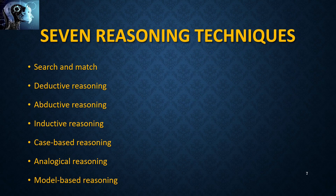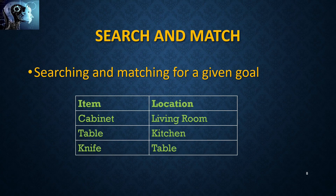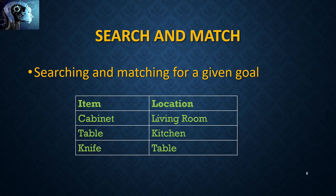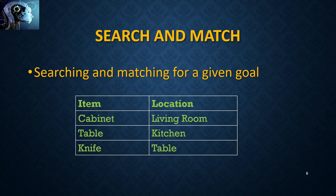Now we move into some specific categories of reasoning techniques. There are seven types of reasoning techniques. The first is search and match. Here, you have some set of information, and by searching you can find the matching goal or conclusion. For example, you have information in a table showing what items are in your house and their locations. It shows the cabinet is in the living room. When you want to find the location of the knife, you first find the immediate location of the knife — according to the table it is on the table. Then you search again for the table's location and find that the table is in the kitchen. This overall process uses the search and match reasoning technique.